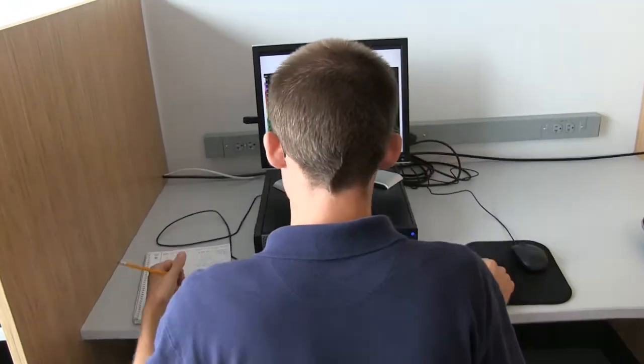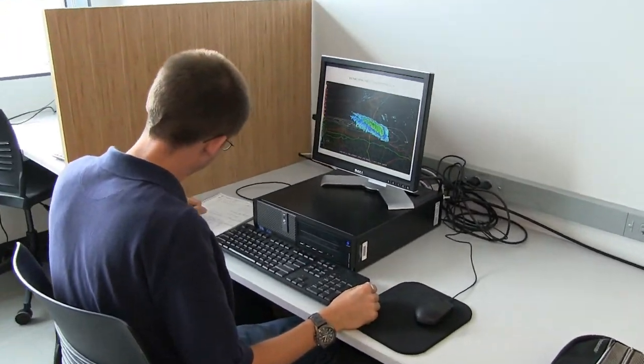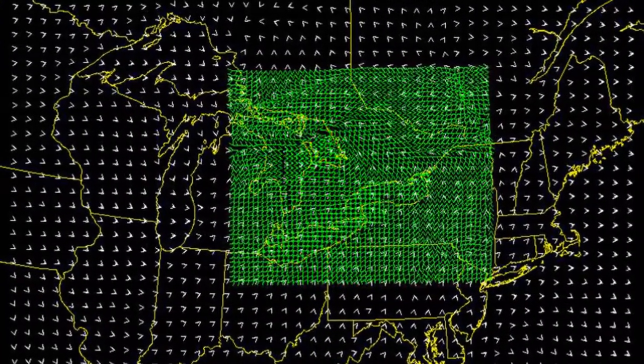We're running a computer model. WRF stands for Weather Research and Forecast model and it's run at a four kilometer grid, so imagine like boxes next to each other, they're spaced at four kilometers.